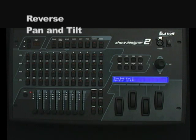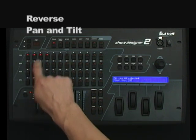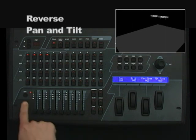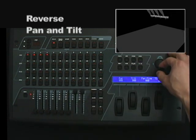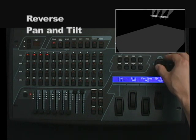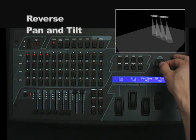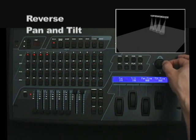You can also invert the pan and tilt for the joystick for any selected fixture. Before doing that, I want to show you what the normal pan-tilt function looks like using the joystick. I'll use my faders to open the beam, then adjust my lights so that you can see the beam and the pan-tilt motion. As you can see, all moving heads are moving in the same direction.